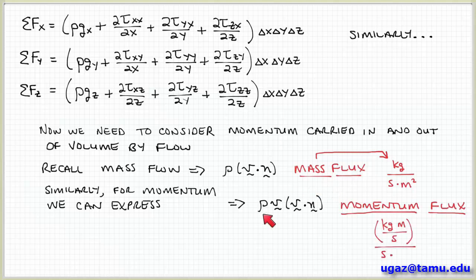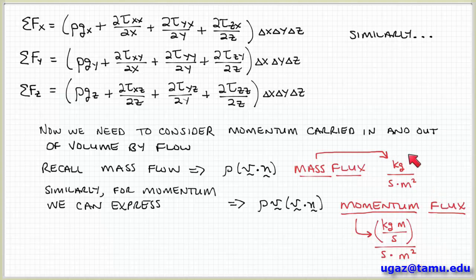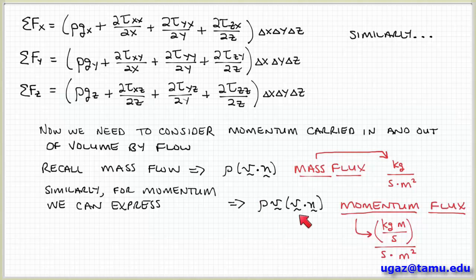The v dot n term selects the component of velocity actually passing through the surface, making this analogous to the mass flow — it's a momentum flux. Since momentum is mass times velocity (mv) with units of kilograms meters per second, this is a momentum flow rate per area. It's exactly the same approach as conservation of mass, except instead of accounting for mass we're accounting for momentum flow using the term rho v times v dot n.